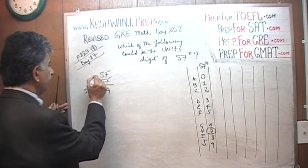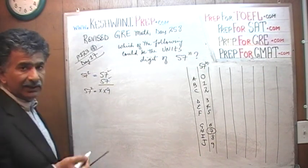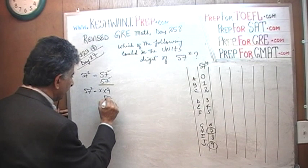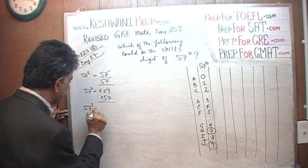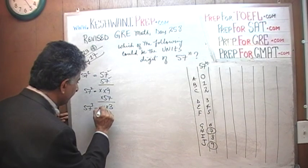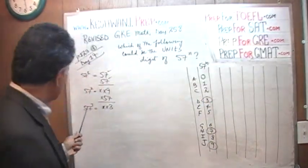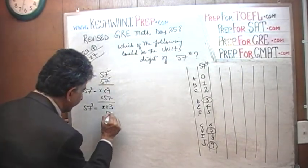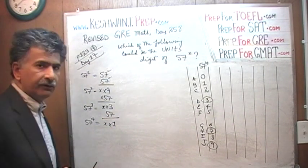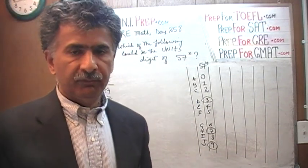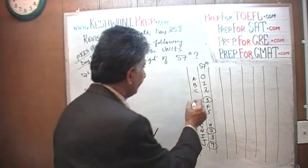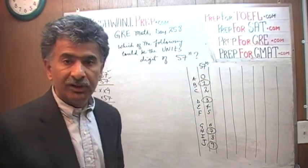So 57 raised to 1 ends in a 7, and 57 raised to 2 ends in a 9. Let's multiply by 57 one more time — that represents 57 raised to 3 — and that results in 9 times 7, which is 63, so it ends in a 3. Multiply by 57 one more time: 3 times 7 is 21, so 57 raised to 4 ends in a 1. We are going to keep going until we see a pattern begin to repeat.